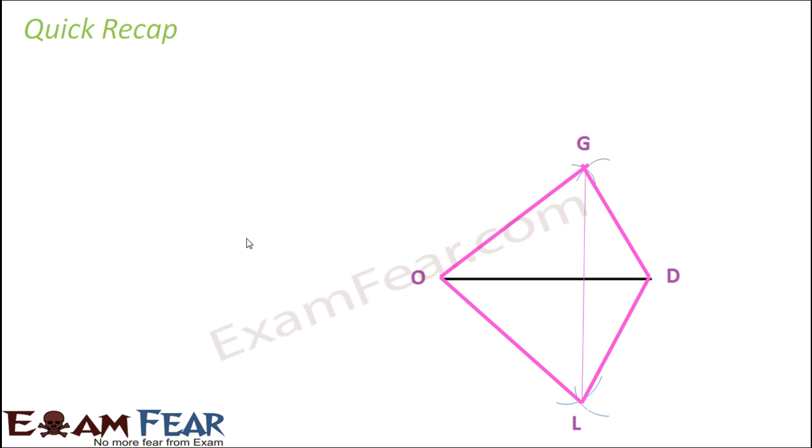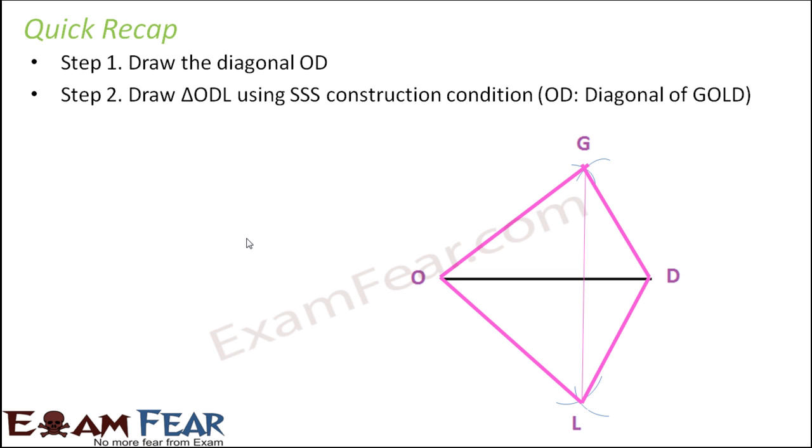So let us have a quick recap. So in these kind of problems we first draw one of the diagonals then we draw one of the triangles using the SSS construction condition. Now in order to draw a triangle by SSS construction condition it is important that the measurement of all the sides of the triangle are given.